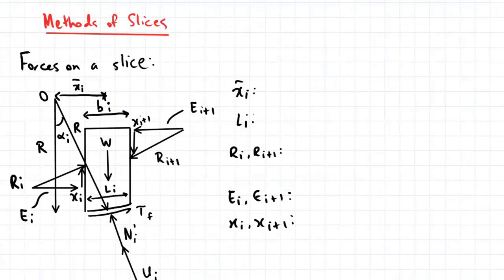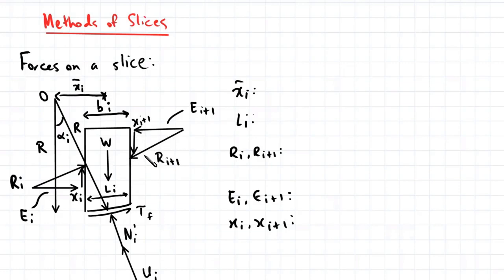Let's look at a single slice and the forces which act on it. This slice is going to have a force due to its own weight. There will be a resisting shear force acting at the base of the slice, and because we are slicing the sliding mass up into a series of slices, we are exposing the internal forces which act between adjacent slices, and these are known as inter-slice forces.